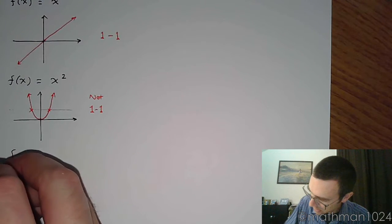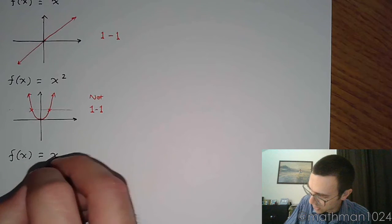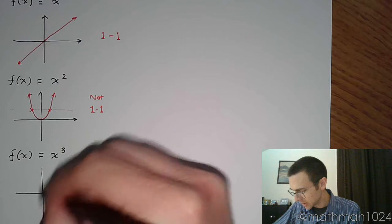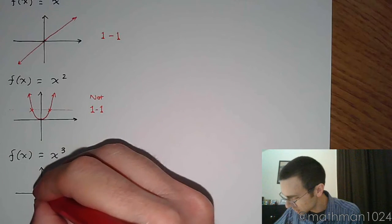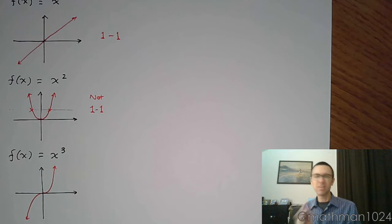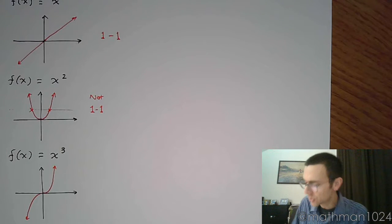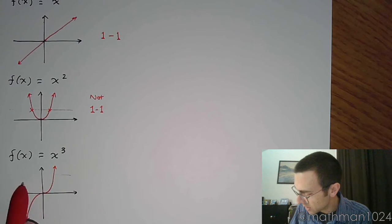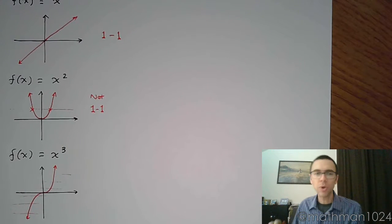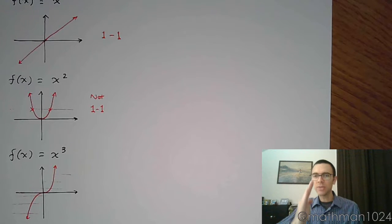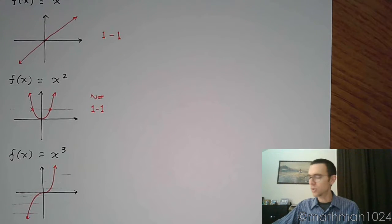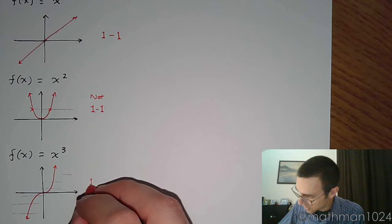Next on our list was the cubing function, looking at x to the third. So x to the third was the cactus who has a shape that looks very similar to this. If we try to do that horizontal line test, everything's fine no matter where we draw the horizontal line. Now some people might argue, what about right here? Well, even though it does look like it's getting flat, it's just getting flat there for just a moment as it starts to curve back up. So this guy will pass the horizontal line test and this is a one-to-one function.